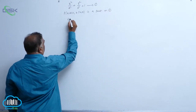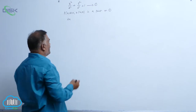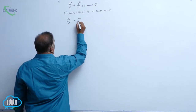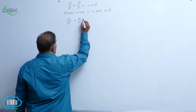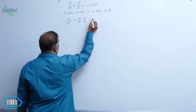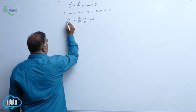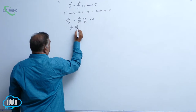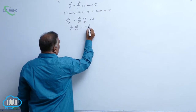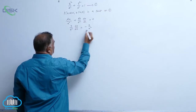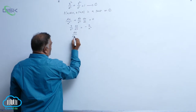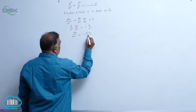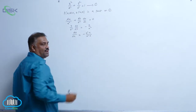Differentiate equation 1 with respect to x: 2x by a squared plus 2y by b squared dy/dx is equal to 0. The 2 gets cancelled, giving y by b squared dy/dx equal to minus x by a squared. So dy/dx is equal to minus b squared x by a squared y.